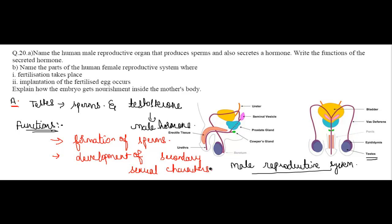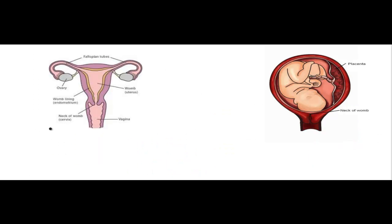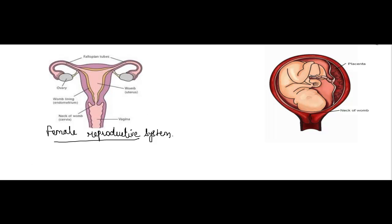Now let's see the second part of this question: name the parts of the human female reproductive system where fertilization takes place. This is the female reproductive system. The parts of the female reproductive system are: a pair of ovaries, a pair of fallopian tubes, and uterus, cervix, and vagina.